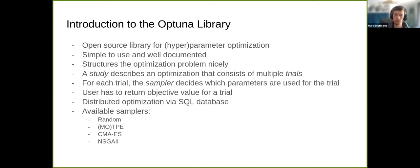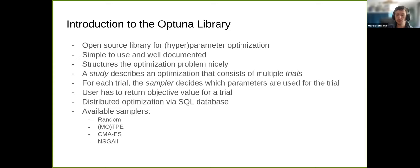We use the Optuna library for all our optimization — we didn't write it ourselves, it's an open-source library for parameter optimization. It's very simple to use and well-documented. In Optuna you have a study, which describes an optimization and consists of multiple trials. A trial is one set of parameters that you try out to find its objective value. Different samplers are implemented — the TPE is one, but most commonly used and best-performing algorithms are available.